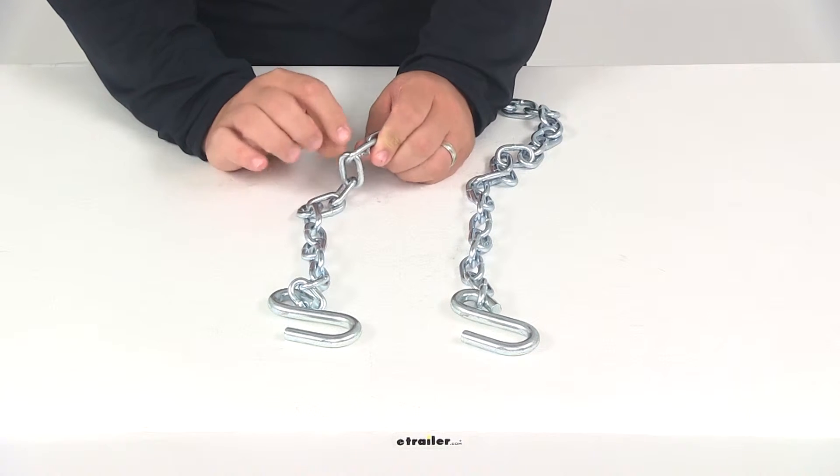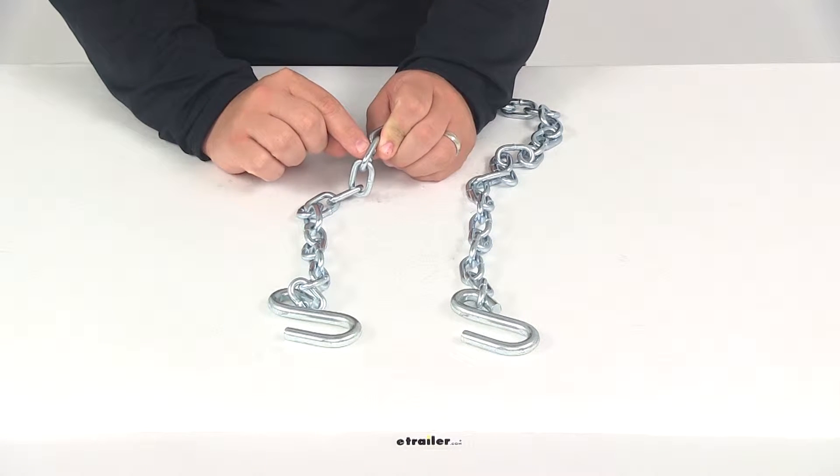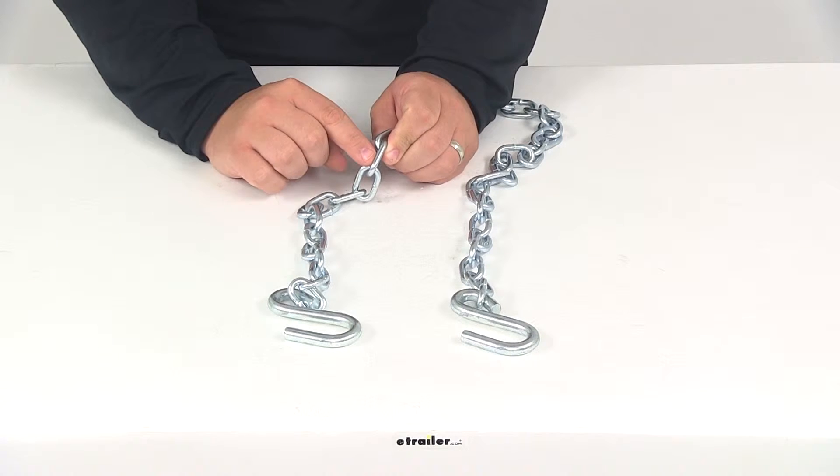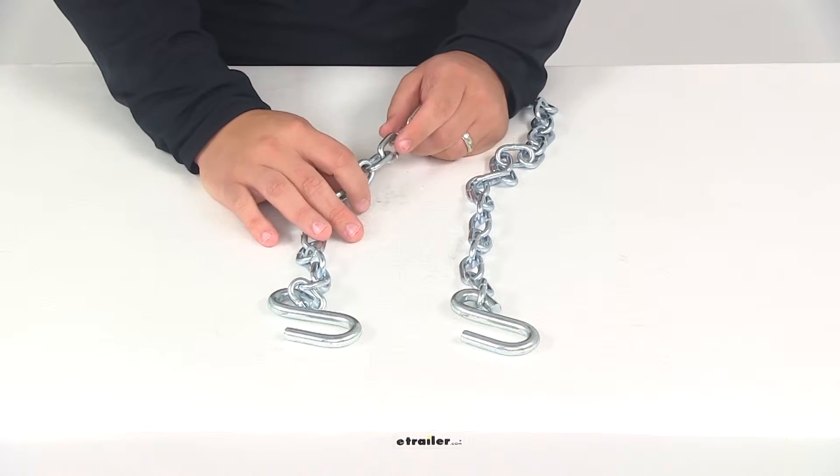When it comes to the chain diameter, measuring the diameter of the link, that's going to measure 3 sixteenths of an inch. It's going to give us an overall length of about 48 inches.